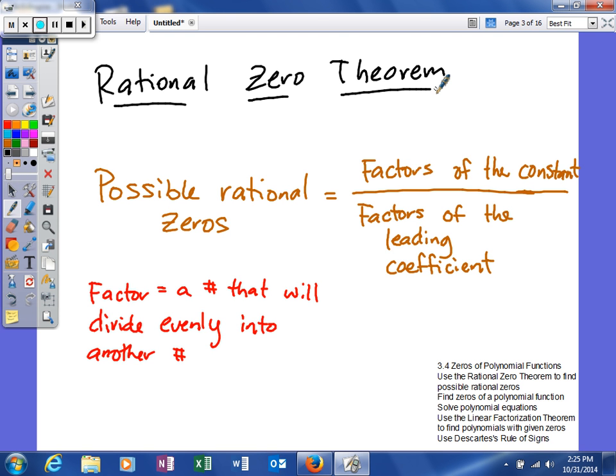The way you find the possible rational zeros is going to be the factors of the constant, remember the constant is the term without the variable, over the factors of the leading coefficient. Just make sure when you're finding the leading coefficient, that you're looking in the right place. It's the coefficient of the term with the highest degree. A factor is basically any number that will divide evenly into another number.